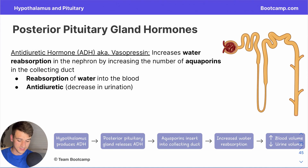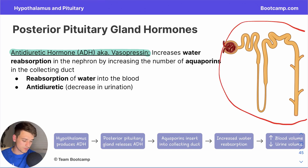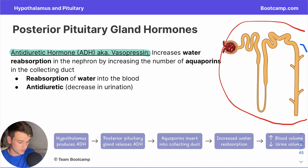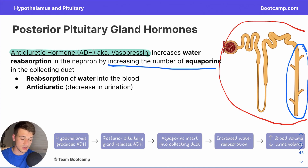Antidiuretic hormone, or ADH, also known as vasopressin — if you recall from the excretory system chapter, the functional unit of the kidney is the nephron. The structure we're focusing on here is the collecting duct, which is involved in reabsorption of water via aquaporins, or water channels. ADH increases the amount of water reabsorption the nephron is capable of by increasing the overall number of these aquaporin water channels, giving us a higher capacity for water retention and reabsorbing more water back into the blood.